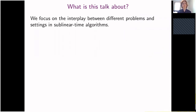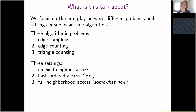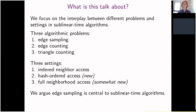So what will this presentation be about? We will focus on the interplay between different problems and different settings in the sublinear time regime. Specifically we will focus on three problems: edge counting, edge sampling, and triangle counting, and we will consider these three problems in three different settings. Throughout this talk I will try to convince you that edge sampling is very central to sublinear time algorithms and that it is a useful tool for designing algorithms for other problems. Specifically, both our algorithm for edge counting and triangle counting rely heavily on our algorithm for edge sampling which we gave in our paper.